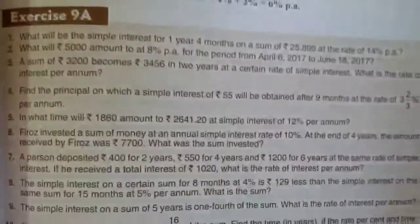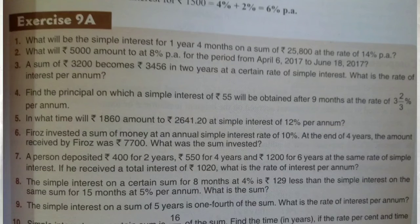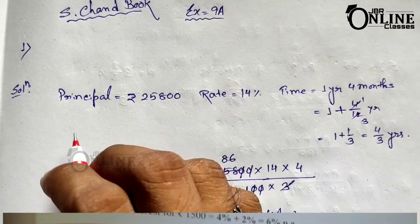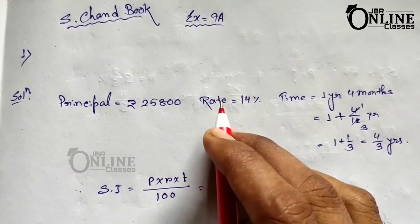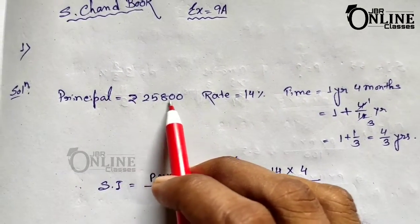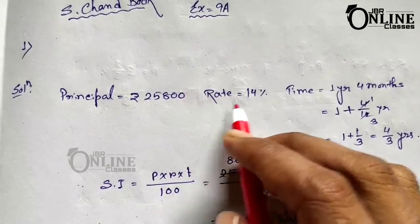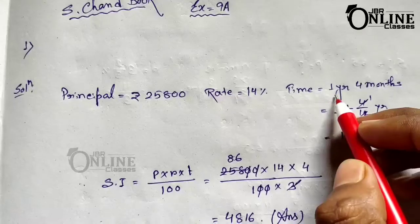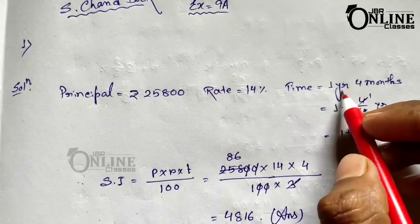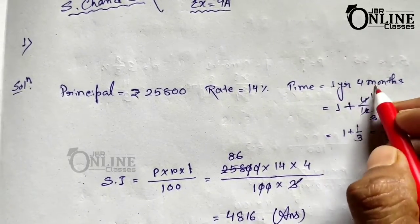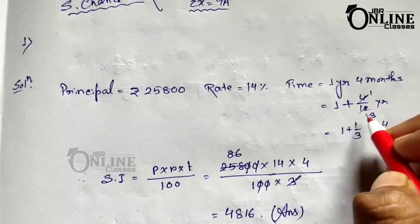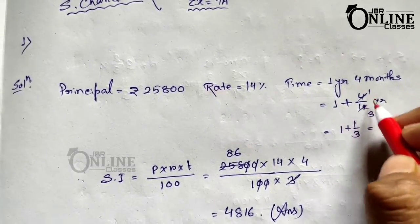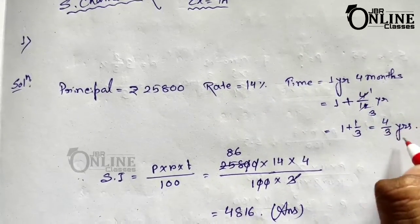Sum number 1: What will be the simple interest for one year four months on a sum of 25800 at the rate of 14% per annum? Here the principal is rupees 25800, rate equals 14%, and time equals one year four months. Four months means 4/12 year, so one year plus 4/12 equals 1 and 1/3, that is 4/3 years. Always convert the time into years.